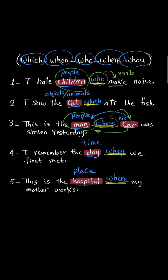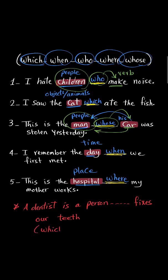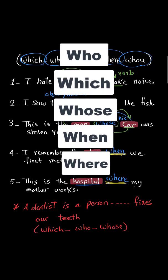Have you known this grammar rule before? Give yourself a mark out of five — I got five! And also answer this question: A dentist is a person blank fixes our teeth. Which? Who? Whose? Let me see your answers. Thank you for watching.